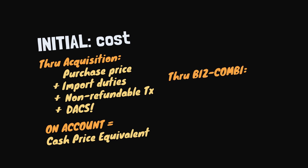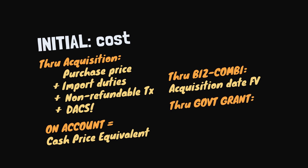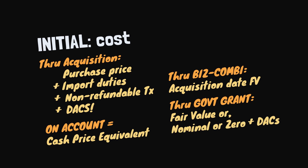If the intangible asset is acquired in a business combination, cost is based on the fair value at the date of acquisition. If there is an active market, the quoted price of an identical asset serves as the most reliable evidence of fair value; otherwise, the price of a similar asset is used. The fair value can also be obtained by discounting the estimated future net cash flows from the asset. Airport landing rights or licenses to operate TV stations may be initially recorded at either the fair value or a nominal amount, plus directly attributable expenditures.